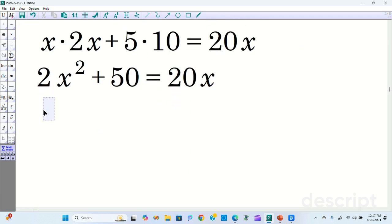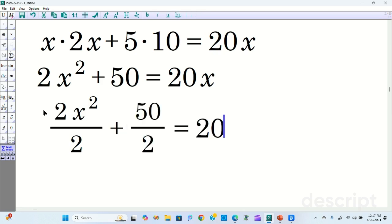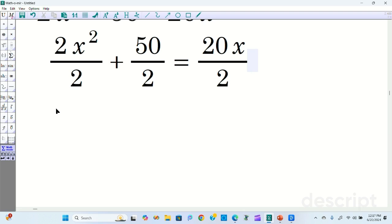Observe something kind of useful and important. 2 is a common factor. You can divide it away therefore. So it's going to be 2x squared divided by 2, plus 50 over 2 equals 20x over 2. Simplify.